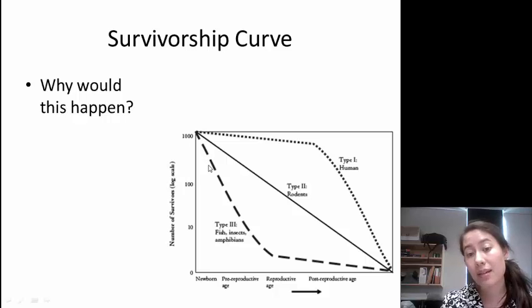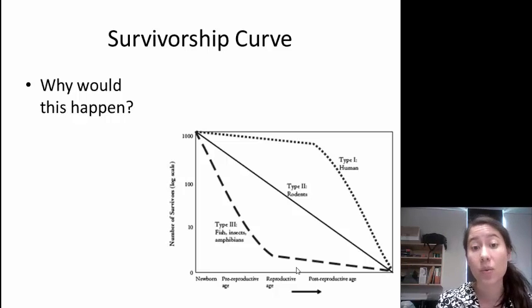The type 3, fish, insects, and amphibians, tend to have a lot of eggs, have a lot of offspring all at once, and then very few of them actually make it to reproductive age. And once again, that has to do with factors in the environment. Predation, lack of resources, and competition for resources will cause survivorship to be lower for those species.